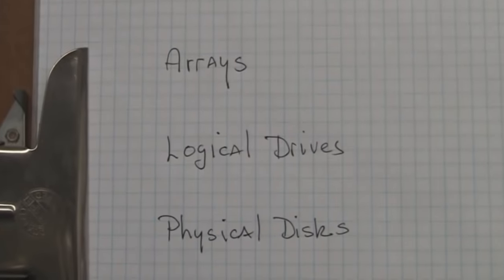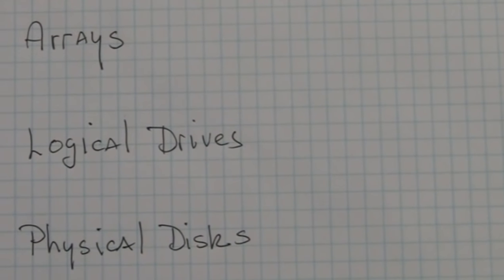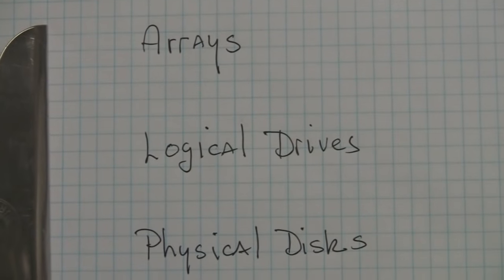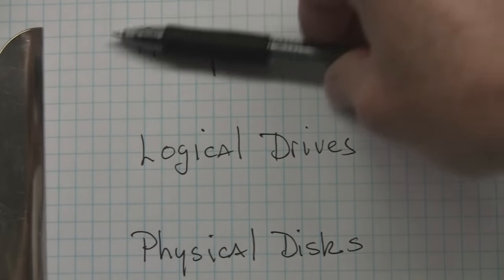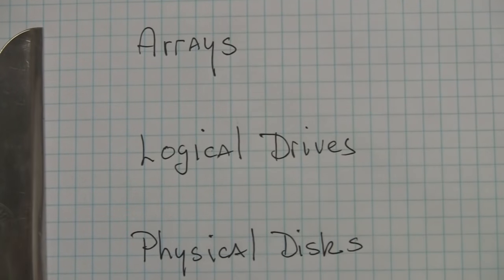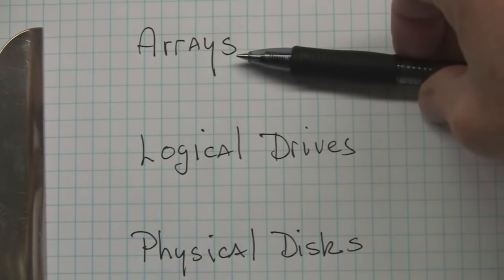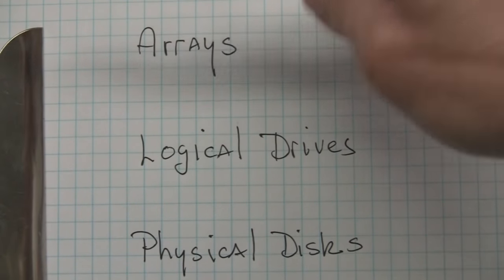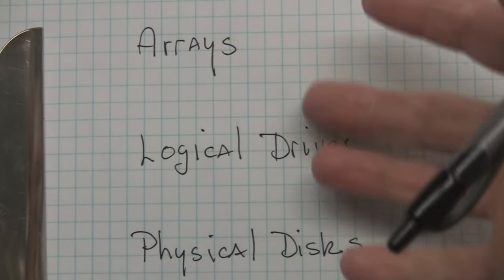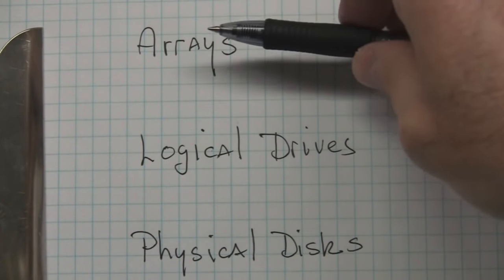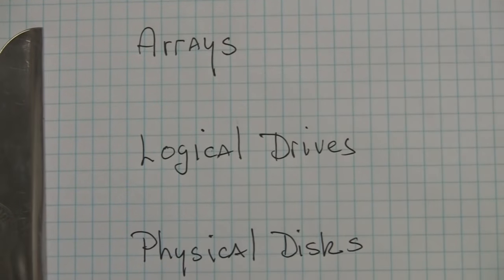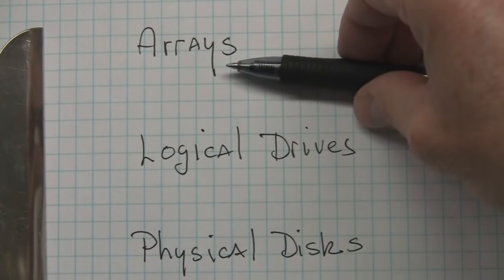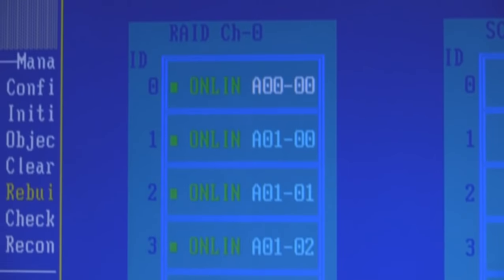I want to talk first about three things as we look at RAID controllers — the more professional ones. We are going to look at three basic things. First, we're going to look at arrays. Arrays help us organize physical disks. The way RAID controllers work is they always want to build an array. An array is taking physical disks and organizing them. An array can be one disk, two disks, three disks, or even 25 disks. In order for a professional RAID controller to handle disks, it must begin by organizing the physical disks into arrays.